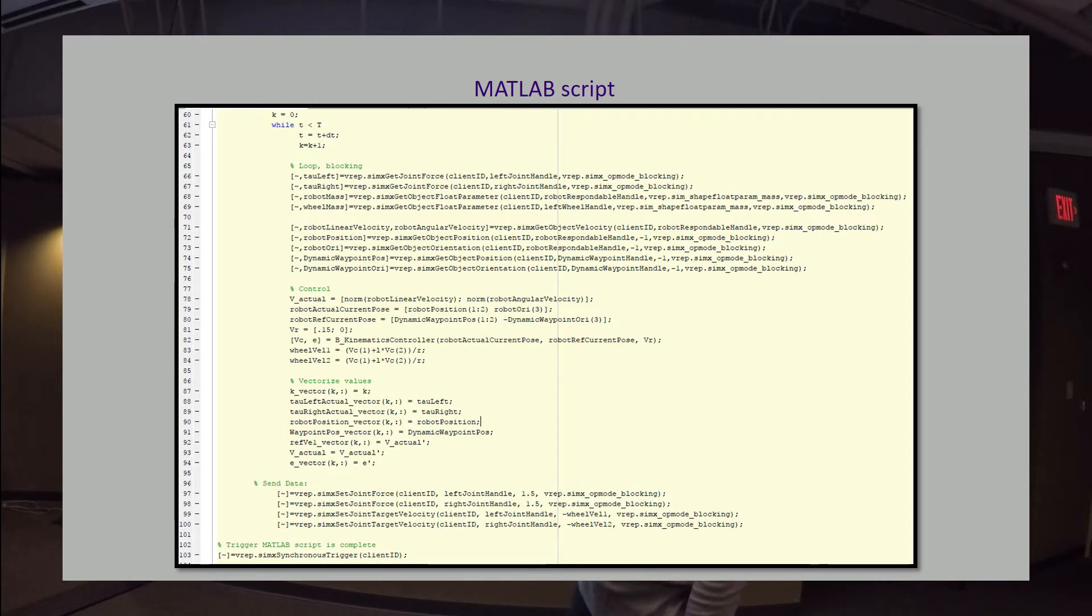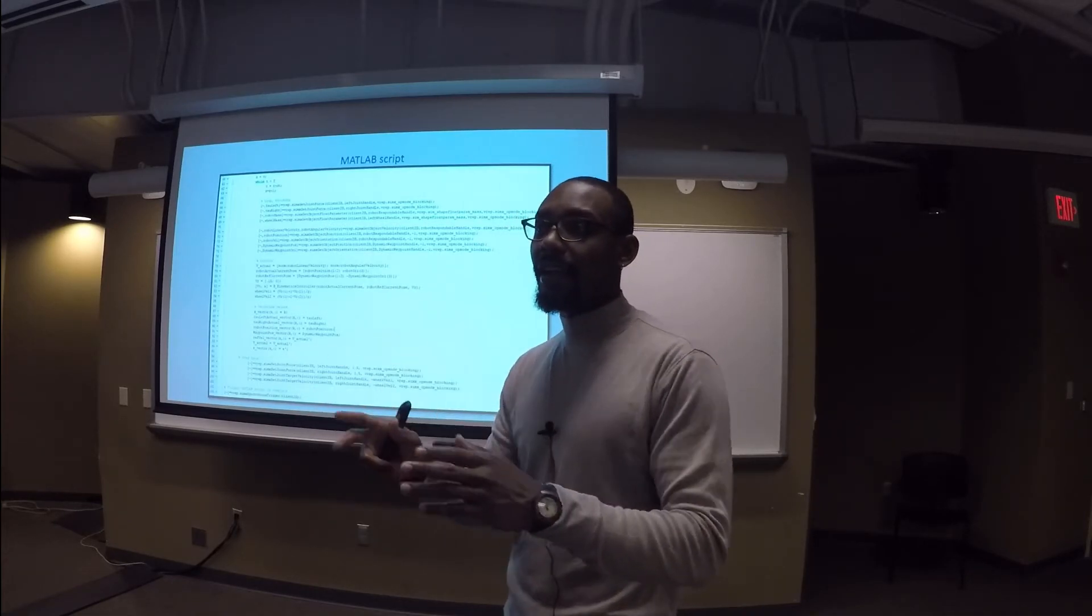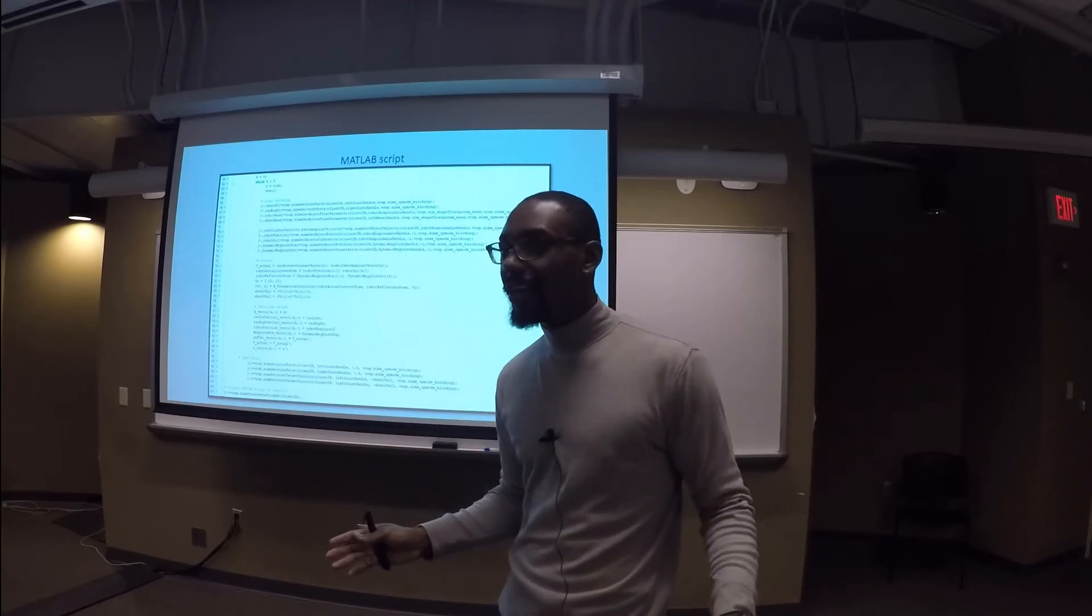Once we have the data calculated, we then send the data from MATLAB over to VREP to actually make the robot move. You see that down here in the send data section, where we're setting the joint force. We set the joint force to some arbitrary level, and then we set the joint target velocity based on the velocity that we calculated from the kinematic controller. Once we do these different things, what we have to do is let VREP know that we're done. We do that by using a trigger, which you see on line 103. We trigger VREP—hey, we've sent everything that we need to send, we've calculated everything we need to calculate. Go ahead and go to the next simulation step.